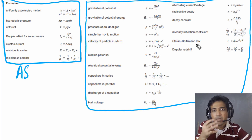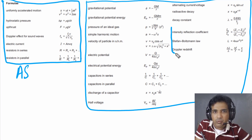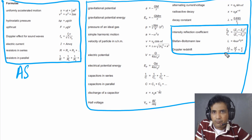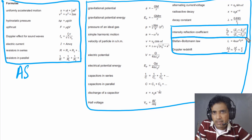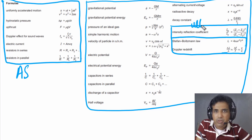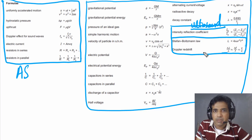There is one subtle change in this formulae list. In 2022, they have added three new formulae because in the new syllabus, we have a new topic about astronomy and cosmology. These formulae are for astronomy and cosmology, and one formula is for ultrasound.